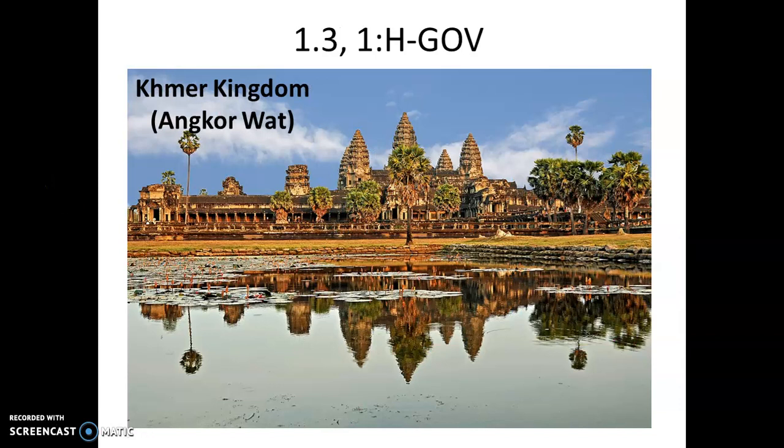Next we move to South and Southeast Asia. We're looking at the development of different Hindu and Buddhist states. These are the ruins of Angkor Wat, part of the Khmer Kingdom, which was at its peak around 800 to 1300. This image is particularly telling because it shows the combination of Hindu architecture also used for Buddhist religious purposes — a dual nature that ties the two traditions together.